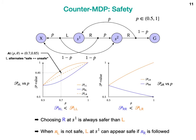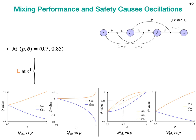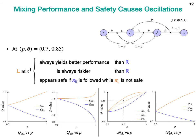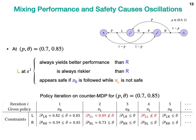In other words, even when Pi_L is not safe, left at S1 can appear to be safe if we follow the other policy Pi_R. In summary, at this point, choosing L always yields better performance than choosing R, is always riskier than choosing R, and appears to be safe if Pi_R is followed while Pi_L is not safe. As a consequence, policy iteration starting with Pi_R chooses Pi_L alternatively since L appears safe when Pi_R is followed at odd iterations, so convergence fails and the fixed point property doesn't hold.